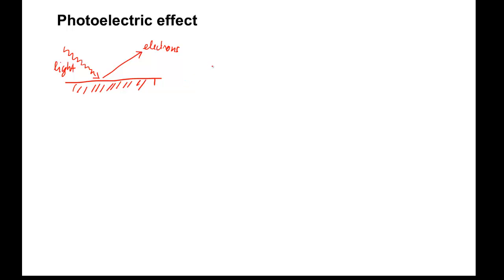This electron emission does not depend on intensity of the light. Quantitatively, it looks like this. If you graph the kinetic energy of the electron against the frequency of the incident light, we will see that below a certain threshold frequency there is no emission of electrons at all, even if the intensity of the light is very high. Simply, the frequency is too low.